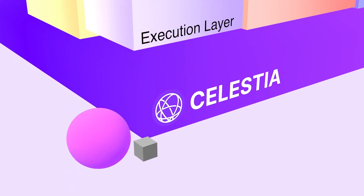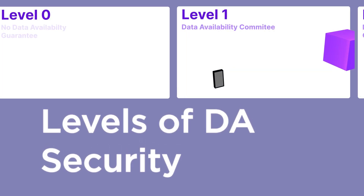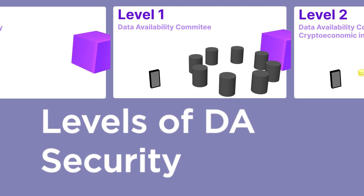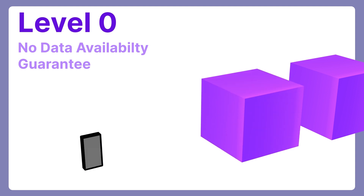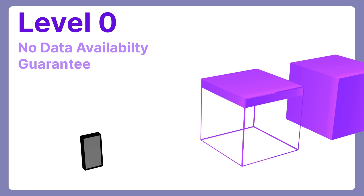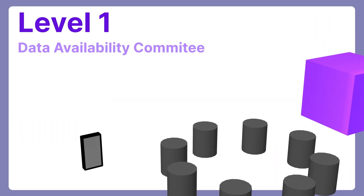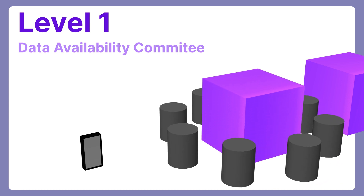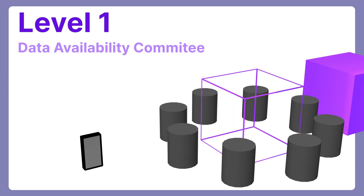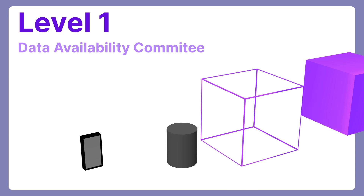Light nodes that check DA through data availability sampling is something you can't do on a normal blockchain. Here are the levels of security that blockchain data availability layers can have, starting from the lowest to the highest. Level 0: no data availability guarantee. Light clients can request a block header that can verify the block exists, but has no guarantees that any data exists or that the block is valid. Level 1: data availability committee — a group of nodes that hold this data can attest that the data is available. You still have to trust that this data is available, but instead of trusting one person, you can have an honest majority assumption.